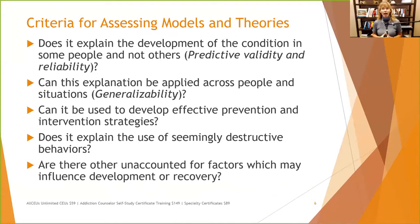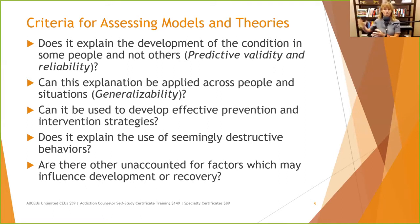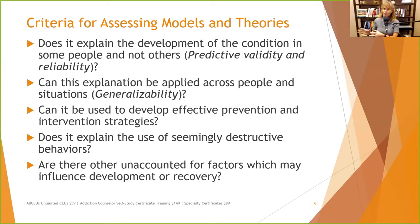Before we get into theories, let's talk about how to figure out which ones are good theories. Does it explain the development of the condition in some people and not others? Predictive validity means the theory can accurately predict who will develop addiction or depression. And it needs to be reliable — if you apply the theory, it should reliably identify someone going to develop depression and be able to predict that across populations.